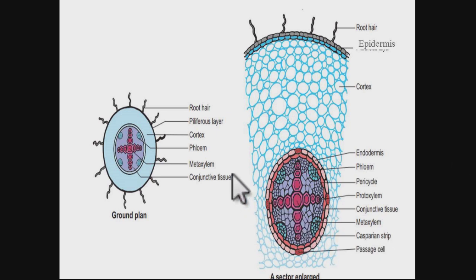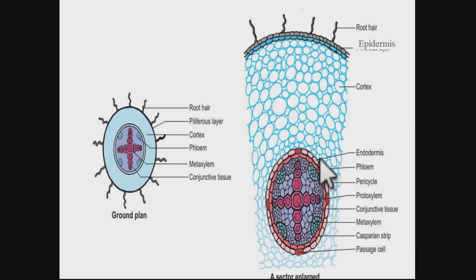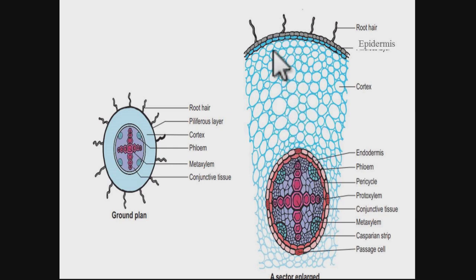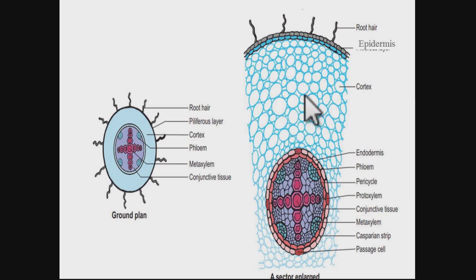One thing to note is that these colors that you can see in the diagrams are not the actual colors. When you look at the transverse section cutting under a microscope to study, the colors are actually colorless. This diagram is made to help you understand the structures.